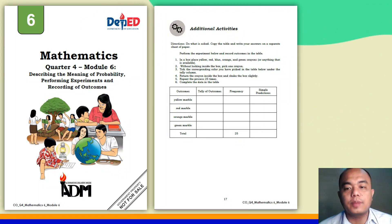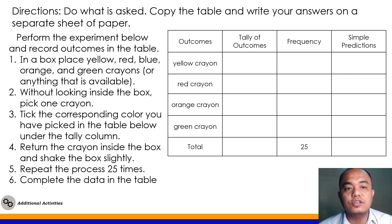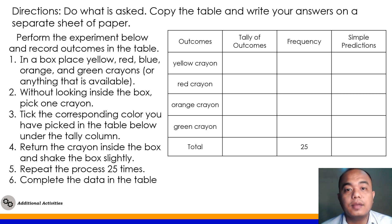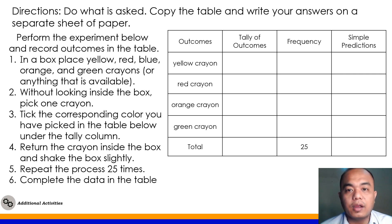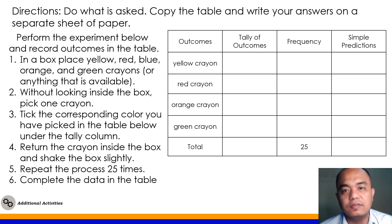Now let's proceed to the additional activities part of your module. Direction: do what is asked, copy the table, and write your answers on a separate sheet of paper. Perform the experiment and record the outcome in the table. In a box, place yellow, red, blue, orange, and green crayons, or anything available at home. Without looking in the box, pick one crayon and record the corresponding color in the tally column. Return the crayon inside the box, shake it lightly, and repeat the process 25 times. Then complete the data in the table.